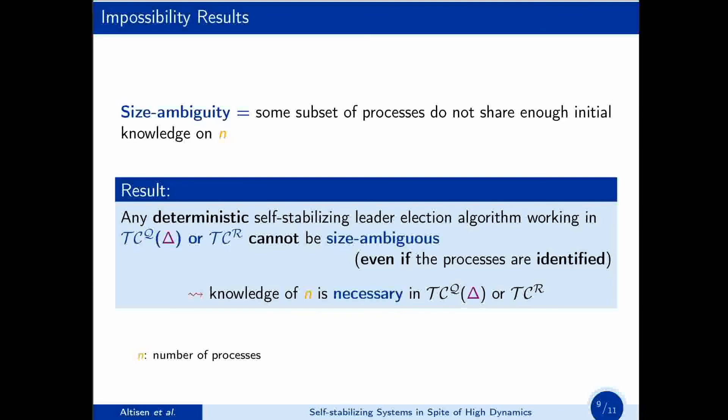With that context, we first have some impossibility results. We defined the notion of size ambiguity. It means that some subset of processes do not share enough initial knowledge on n, the number of processes, in order to be able to distinguish whether the network is only composed of them, or is bigger than that. Our result is that any deterministic self-stabilizing leader-election algorithm that works either for class TCQ-delta or TCR cannot be size ambiguous, and that is even if the processes are identified. In other words, the exact knowledge of n, the number of processes, is necessary to solve this problem in TCQ-delta or in TCR.